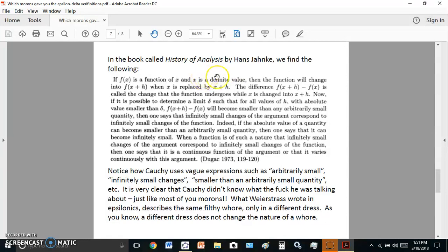In the book called History of Analysis by Hans Juncker, we find the following. Now read this crap paragraph here, okay? Hit your pause button and read it. Notice how Cauchy uses vague expressions such as arbitrary small, infinitely small changes, smaller than an arbitrary small quantity? What the fuck does that mean? It is very clear that Cauchy didn't know what he was talking about, just like most of you monkeys. What Weierstrass wrote in Epsilonics describes the same filthy whore owning a different dress. As you know, a different dress does not change the nature of a whore.